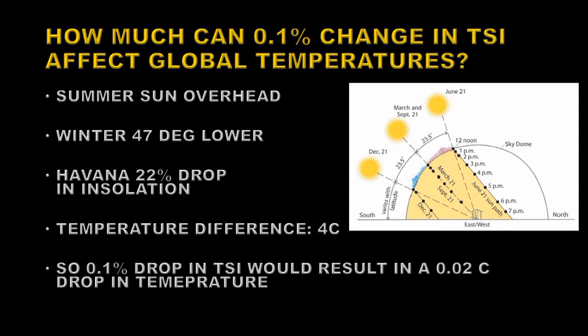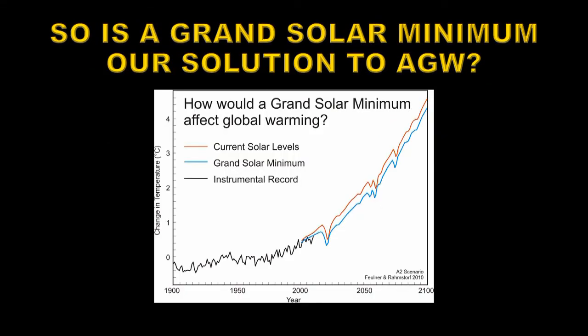You can do this for any city — look up the latitude, work out the altitude of the sun at summer and winter solstice, find the difference in average temperatures, and you'll get basically the same result. Many are claiming we don't need to worry about anthropogenic global warming because a grand solar minimum would cool global temperatures enough to counteract it. A calculation done by scientists in 2010 showed the difference between current solar levels and those in a grand solar minimum on global temperatures. The change is absolutely minimal, consistent with the 0.02°C figure.